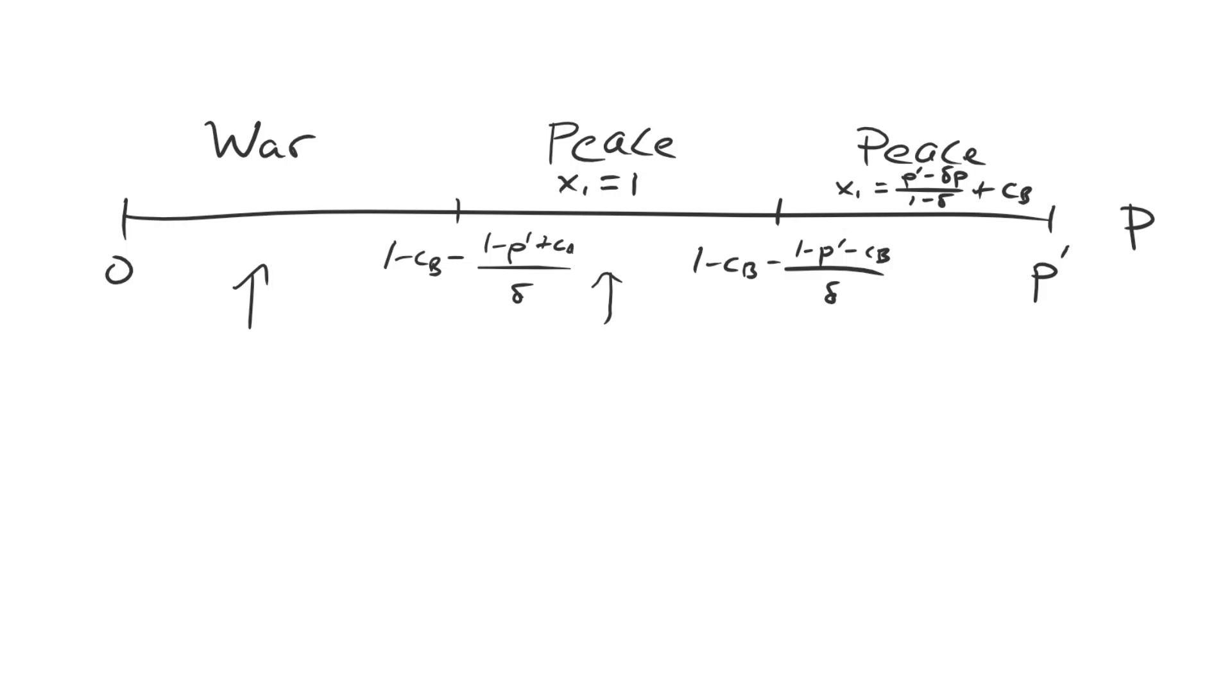In contrast, when p is very close to p prime, that's this final region here, now a has to make some sort of concession in the first stage. Otherwise, b is not going to be okay with that. It would rather fight a war. a wants to avoid that, and so it makes a small concession. b doesn't see so much value in the future that it's willing to forgo everything today, because the shift in the balance of power isn't very large.